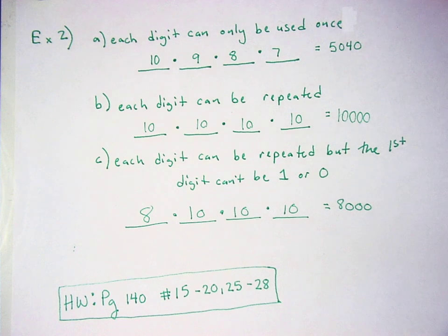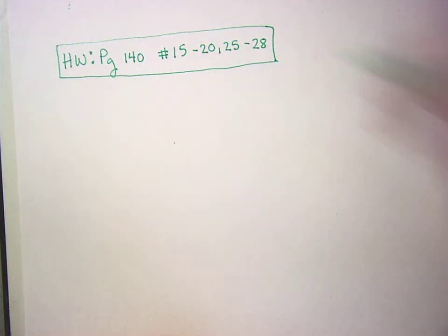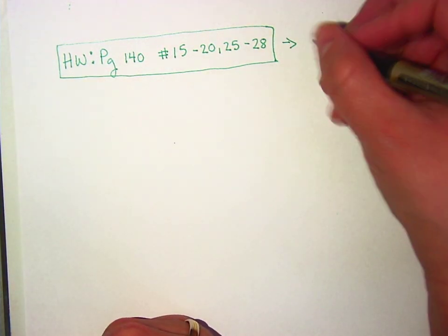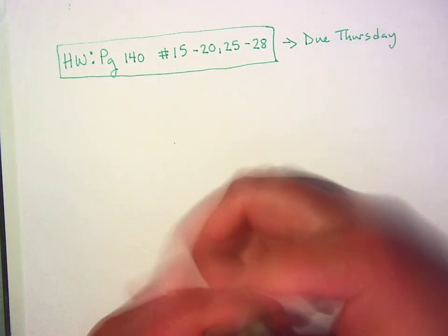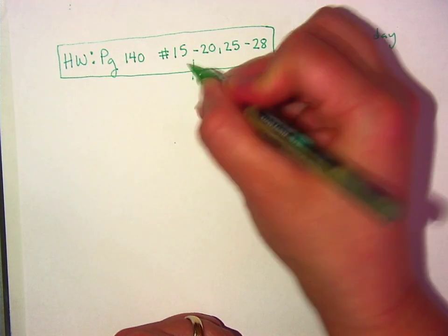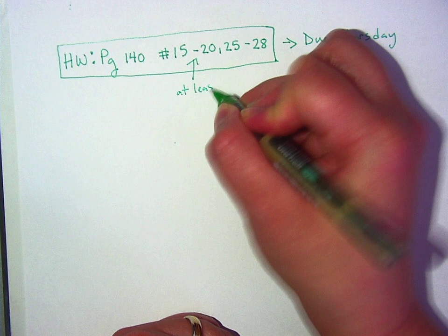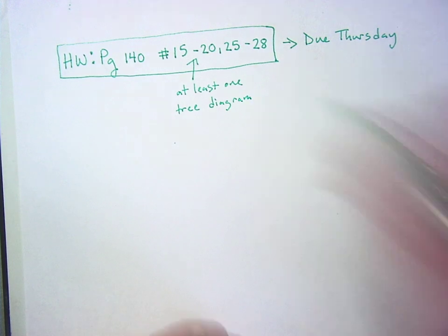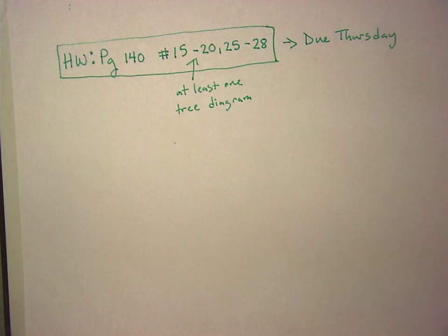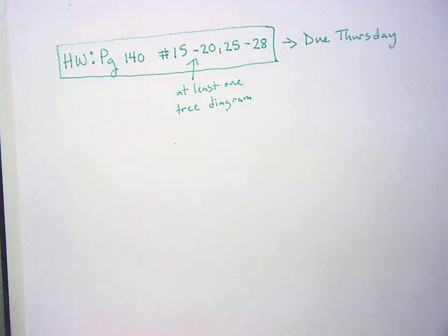Now, tomorrow we're going to play the lion game, which will be fun, but I want to tell you right now, do not count on any work time tomorrow during class. This assignment is going to take you like 10 minutes. I do want at least one tree diagram. I would strongly suggest, if you want something that is easy for your tree diagram, that you pick number 18 or 19.